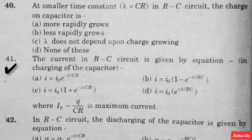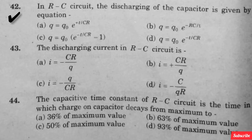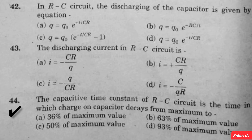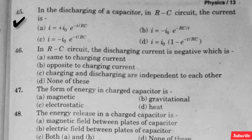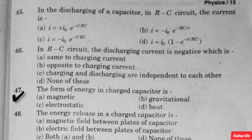The current in RC circuit during charging of the capacitor is given by the equation — option A is right. In RC circuit, the discharging of the capacitor is given by equation — option D is right. The discharging current in RC circuit is — option C is right. The capacitive time constant of RC circuit is the time in which charge on capacitor decays from maximum to — option A is right. In the discharging of a capacitor in RC circuit, the current is — option C is right. In RC circuit, the discharging current is negative — option B is right. The form of energy in a charged capacitor is — option C is right.